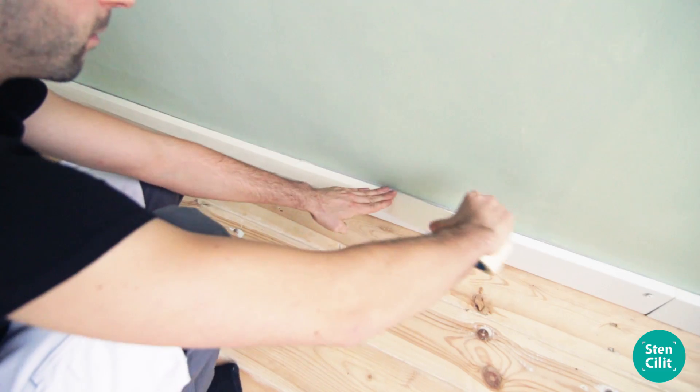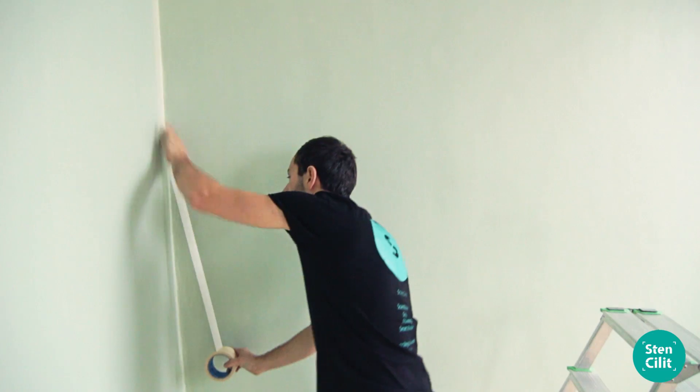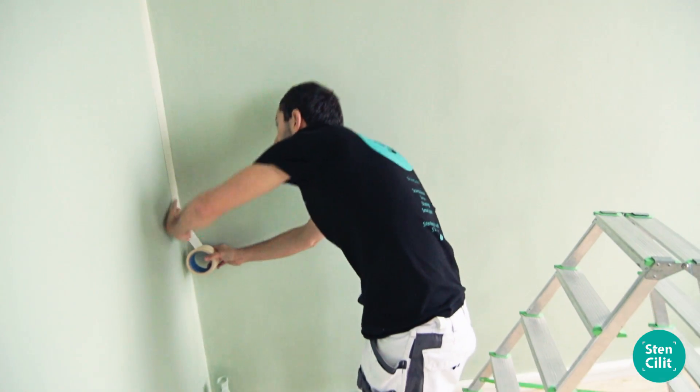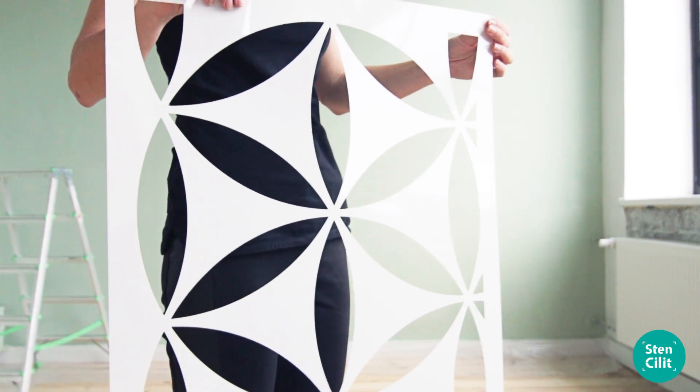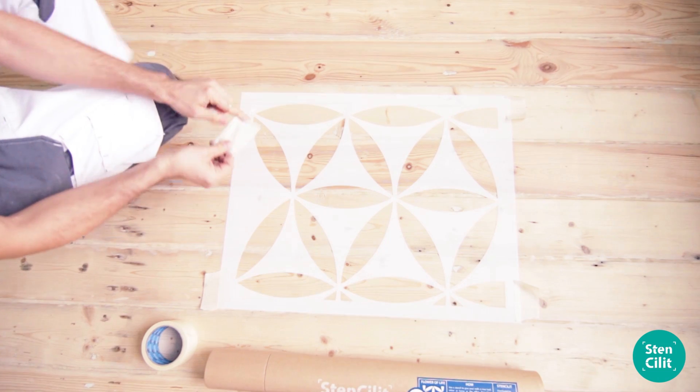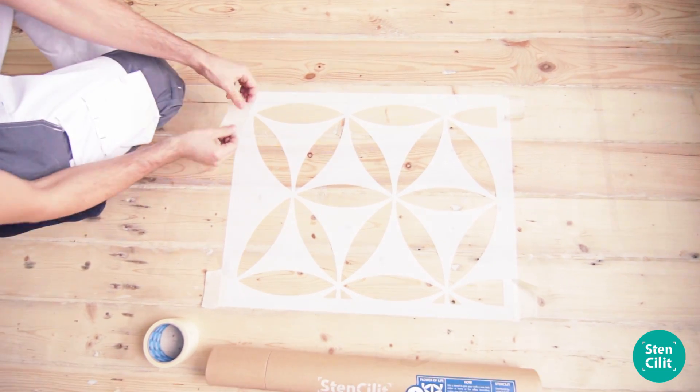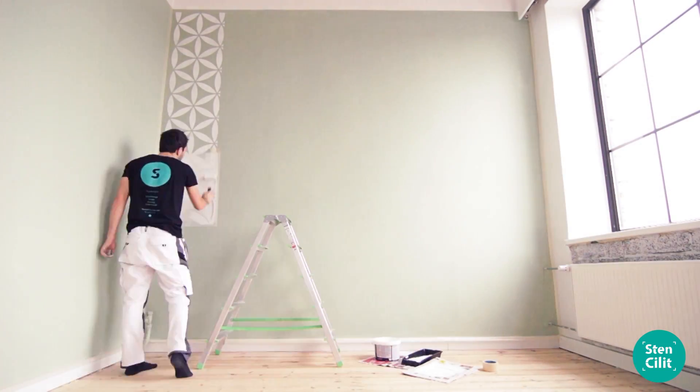Mask off the baseboard and the corners of the walls with painter's tape. Now we can start stenciling. For attaching the stencil on the wall, use painter's tape or a spray adhesive. We suggest starting from one of the corners of the wall.